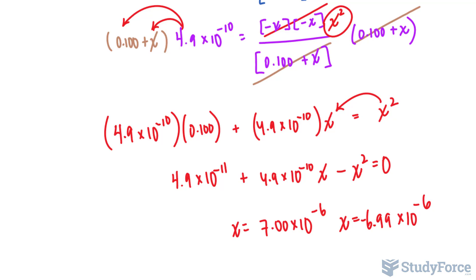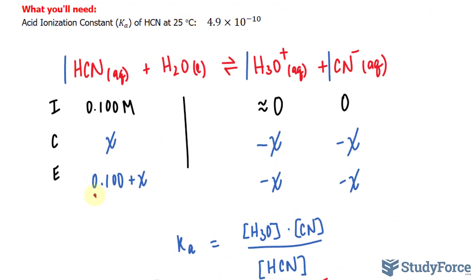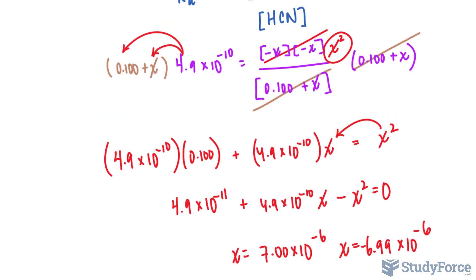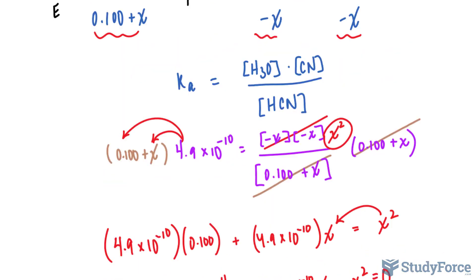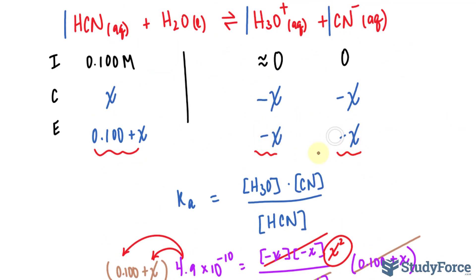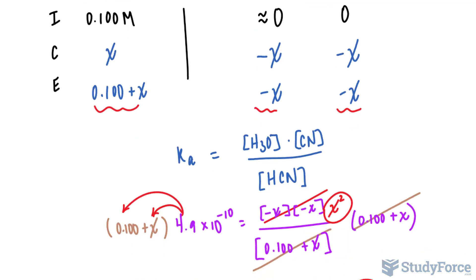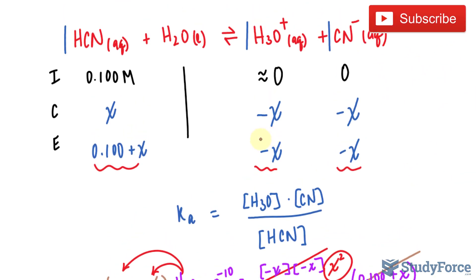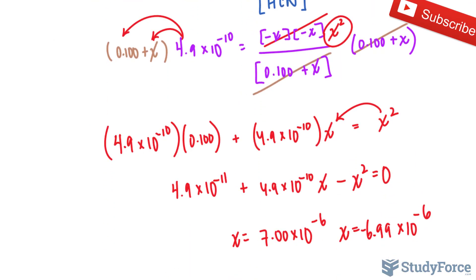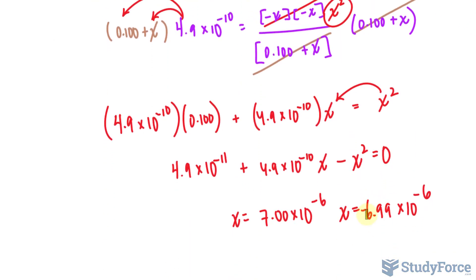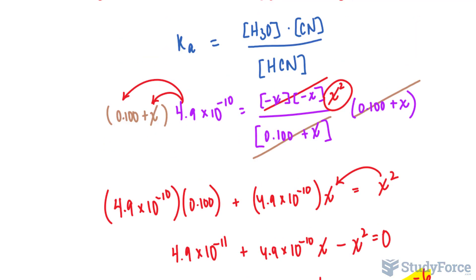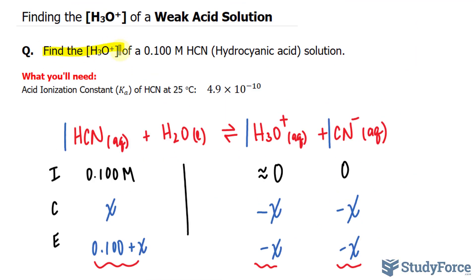The one we choose is the one that will give us positive outputs here, here, and here. Obviously, by choosing the negative one, this will become positive, that will become positive, and even adding a small negative number to 0.100 will give us a positive output. Therefore, we can conclude that the concentration of hydronium is positive 6.9 times 10 raised to the power of negative 6. And that answers the question.